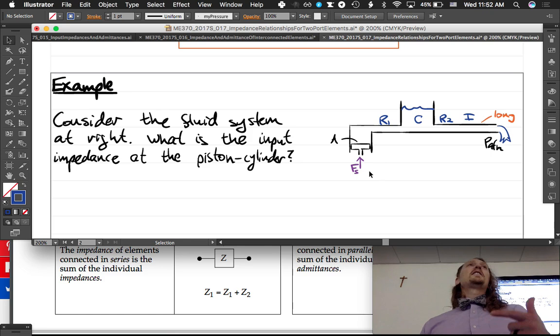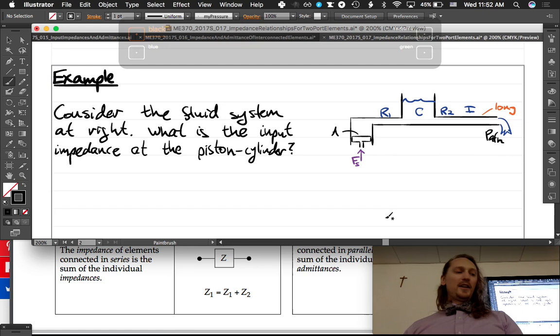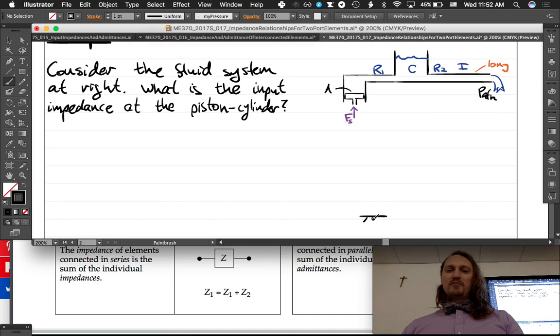So what impedance is felt at the piston-cylinder? Oh look, this is a mechanical system here, right? The piston, and then it turns into a fluid system for the rest of it. So we have either a transformer or a gyrator happening.